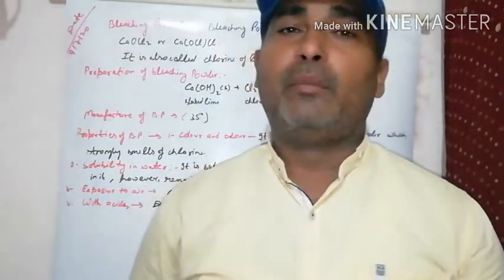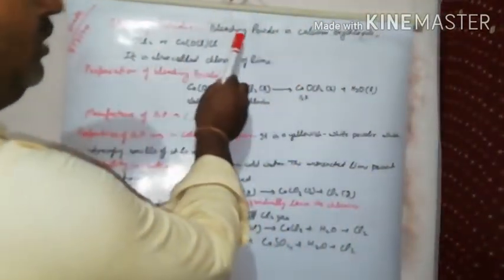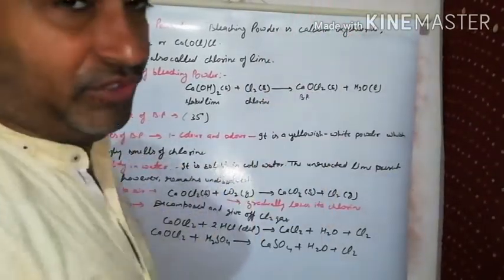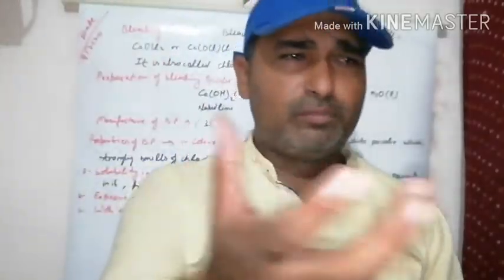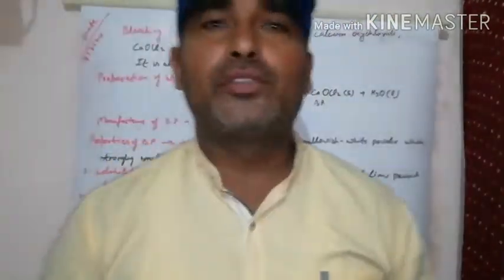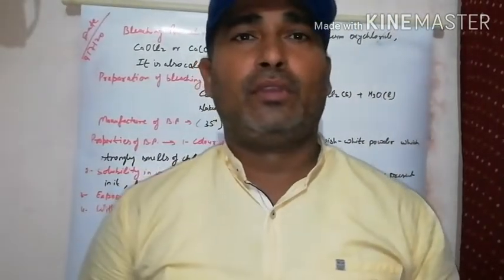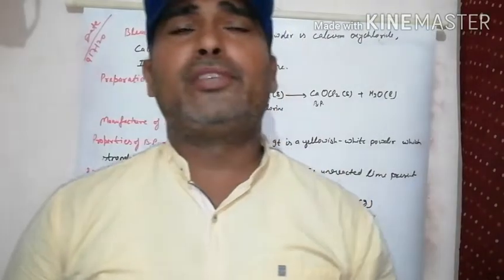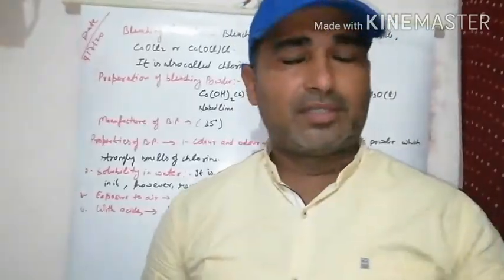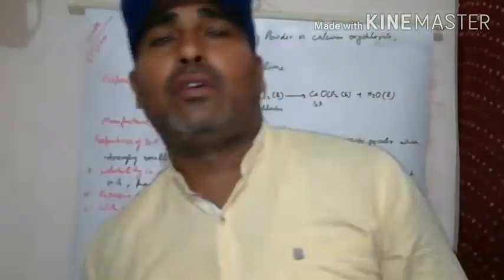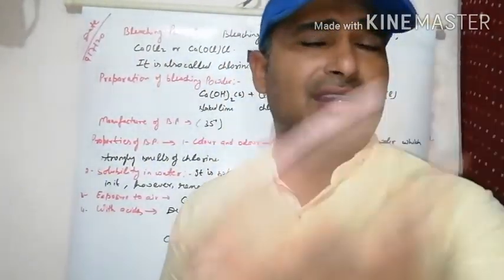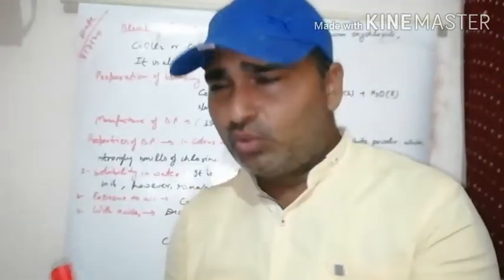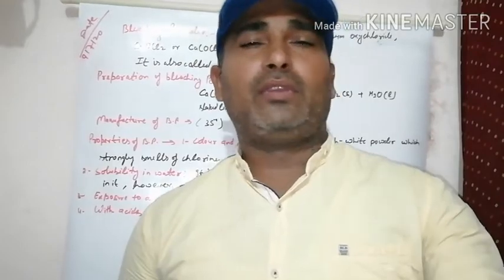First we start from bleaching powder. Bleaching powder is a calcium oxychloride. We use bleaching powder in purifying water, meaning cleaning of water. We use bleaching powder in cotton industries, in paper industries, and we use bleaching powder as an oxidizing agent. These are the uses of bleaching powder.